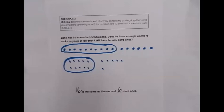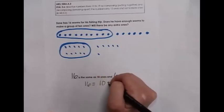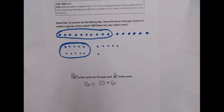At the abstract level, with enough exposure to decomposing at concrete and representational levels, students start to see the pattern and can work abstractly. A student might simply say: 'Zane is going to have a group of 10 ones and 6 more ones, because I know 16 is the same as 10 ones and 6 more ones' — filling in the sentence stem or even representing it as an equation. This is the thinking a student can do at the abstract level for IOA 3A decomposing.